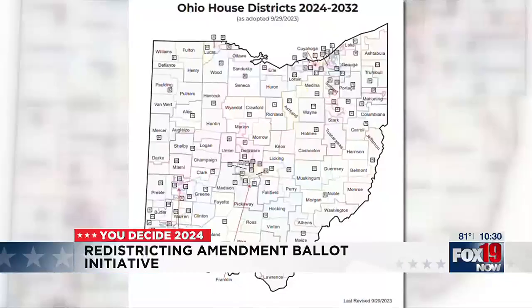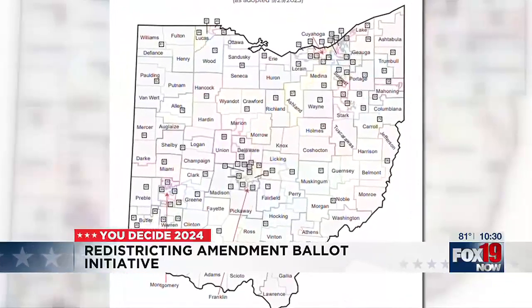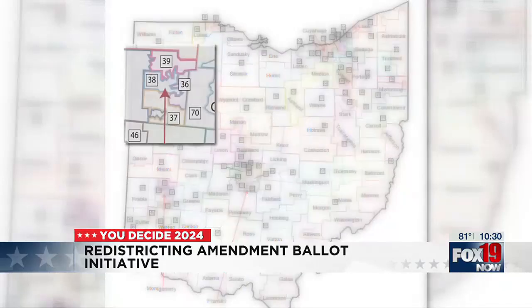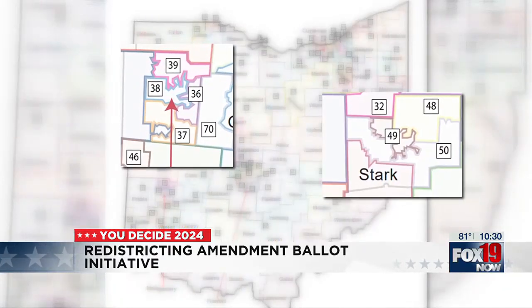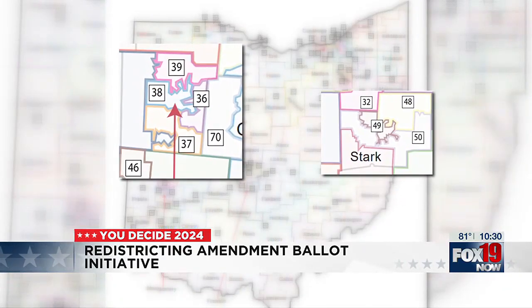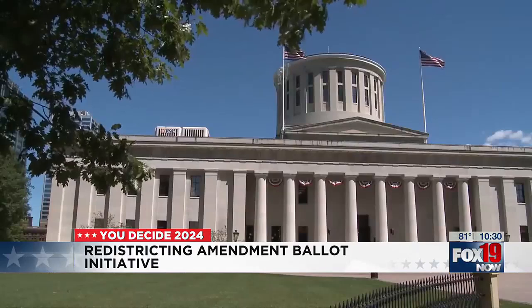Ohio has been one of the most profoundly gerrymandered states in the nation for the last couple of election cycles. University of Cincinnati political science professor David Niven says that means Ohio has numerous districts that have been drawn to favor one political party over another. He says that happens often when maps are drawn by politicians.